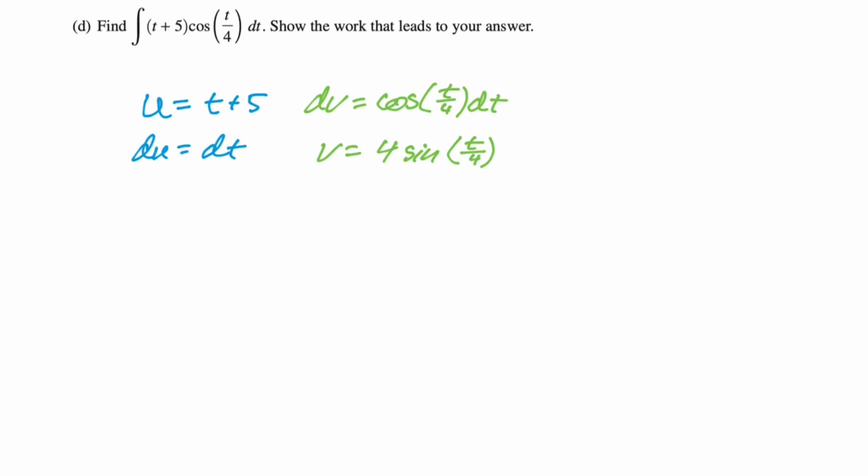We are going to say that our original thing is now u times v. So that's going to be 4 quantity t plus 5 and then sine of t over 4, minus, because that's part of the formula for integration by parts, the integral of vdu. And I'm pulling out the 4 because it's just kind of in the way. So minus 4 times the integral sine of t over 4 dt.